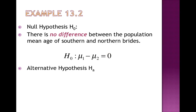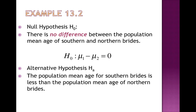The alternative hypothesis is that the population mean age for Southern brides is less than the population mean age for Northern brides. Symbolically, to state that μ₁ is less than μ₂, we write μ₁ − μ₂ < 0. The difference is negative, because μ₁ will be smaller than μ₂, so when you subtract μ₁ − μ₂ you get a value that's negative. That's how we formulate our null and alternative hypotheses.